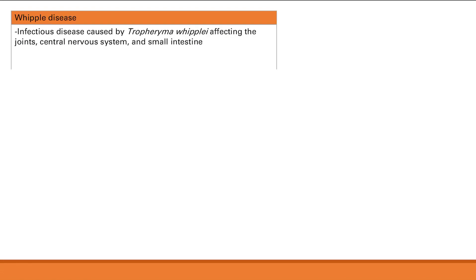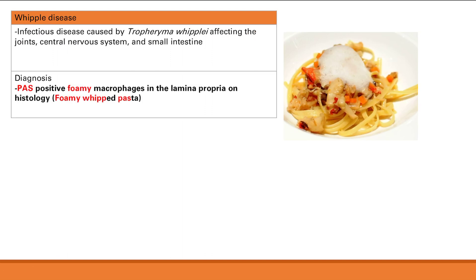Next is Whipple disease, still under malabsorption from insufficient absorption. This is an infectious disease caused by Tropheryma whipplei — hence 'Whipple disease' — and it affects the joints, the central nervous system, and the small intestine. Symptoms include arthropathy, CNS symptoms, and malabsorption. On histology, you will see PAS-positive foamy macrophages in the lamina propria.